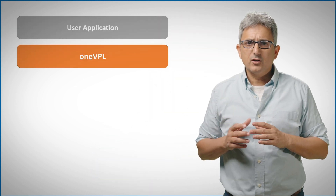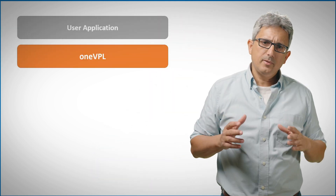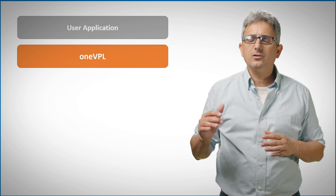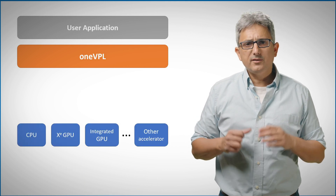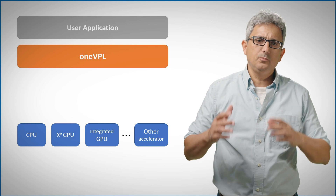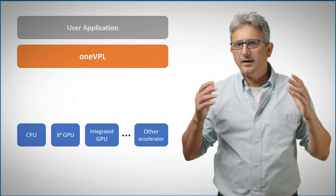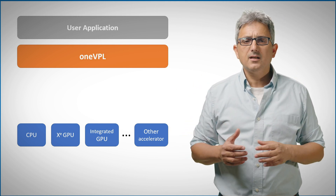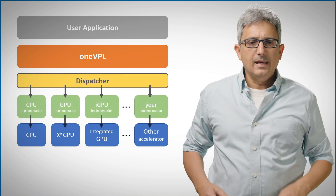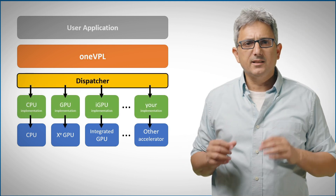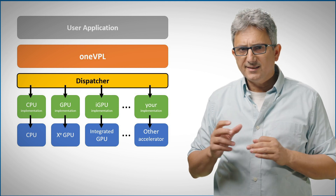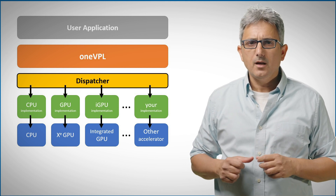The high-level functionality is that OneVPL can be used by your application to accelerate video processing on multiple devices — CPU, GPU, or any other device that implements the OneVPL open spec. A dispatcher is basically choosing the right implementation for the device at hand during runtime.